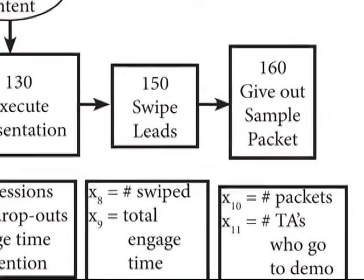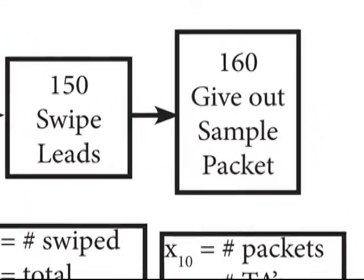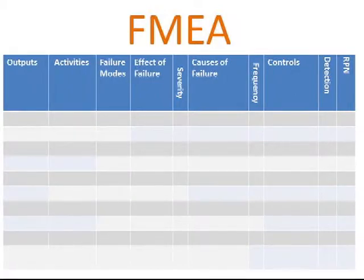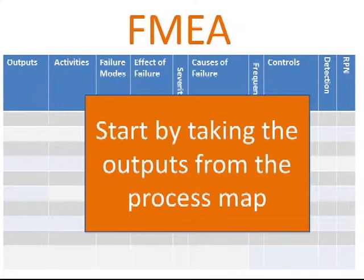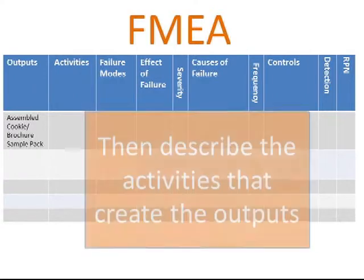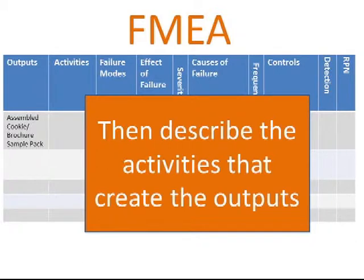For each failure type or mode, a severity rating, frequency rating, and detection rating is allocated. These three numbers are then multiplied together to tabulate an RPN, or risk priority number. Items that have a high RPN are critical failure modes that happen often and are undetectable until it's too late.